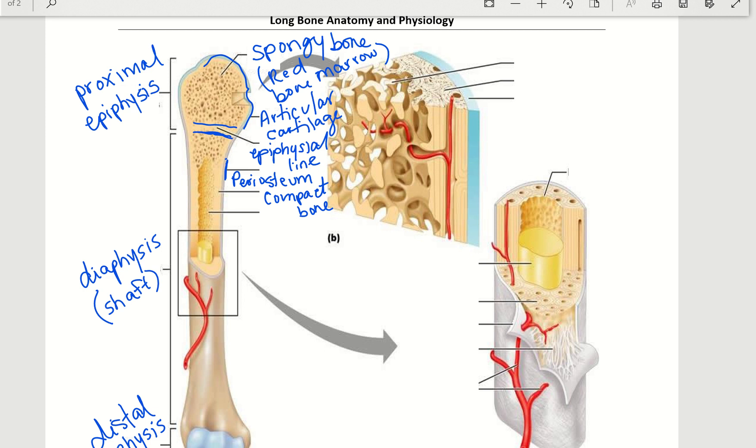And then beyond that compact bone, we've got a hollow cavity that is the medullary cavity. In adults, this is going to store yellow bone marrow, which is adipose. In children, this is where we're going to have red bone marrow formation.